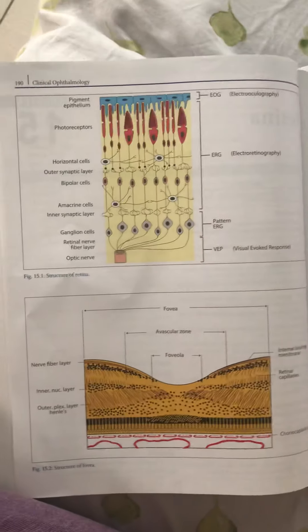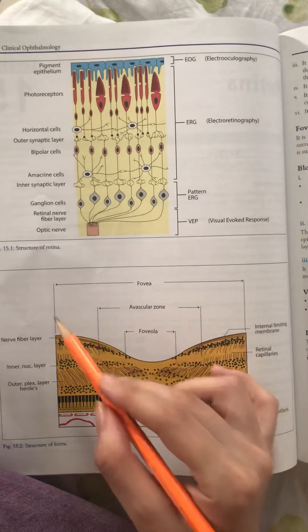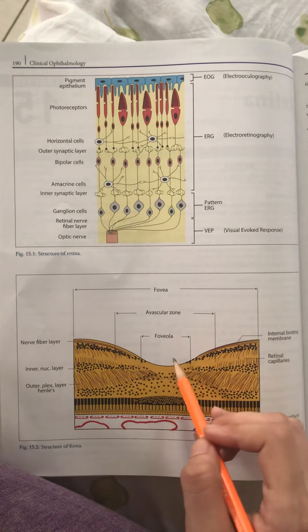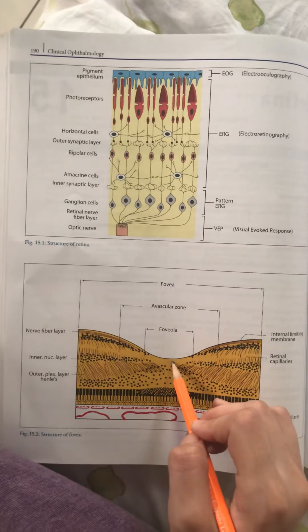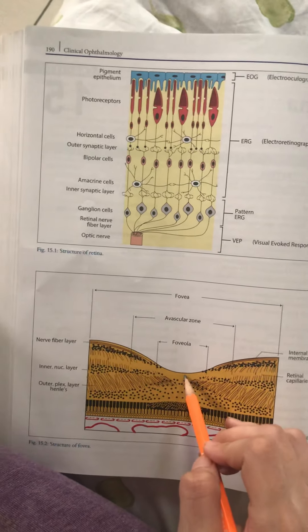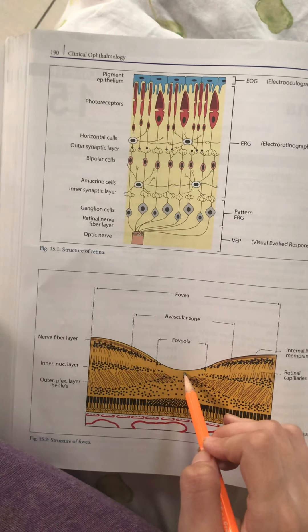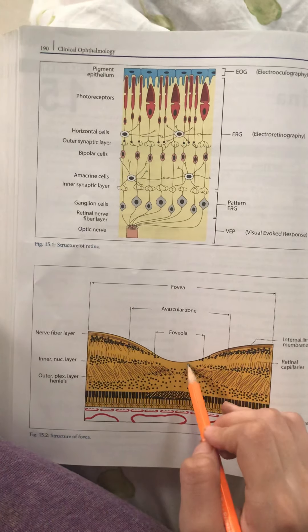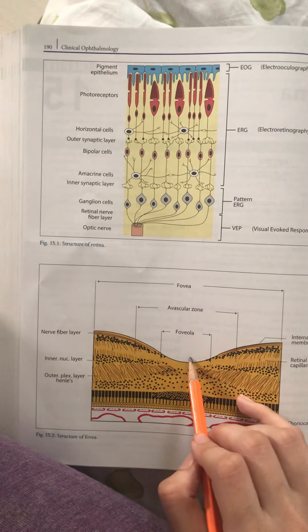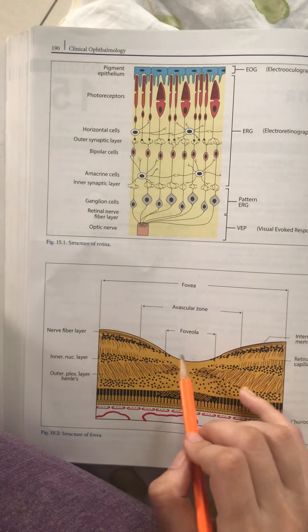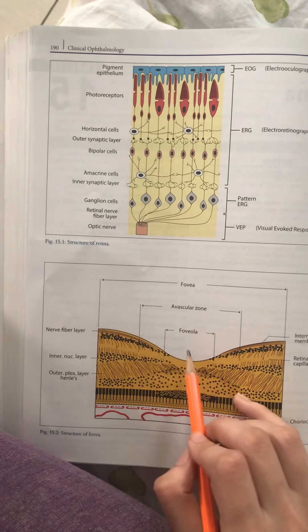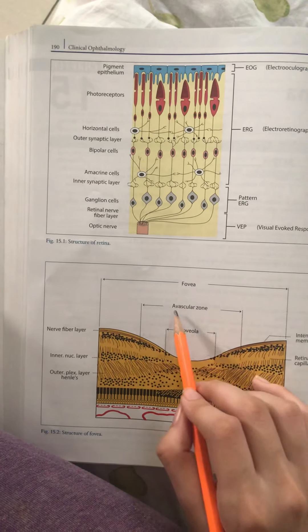In the foveola region, all retinal layers are present across the whole macula. The foveola is avascular — there are no blood vessels, no rods, and no ganglion cells. The retina is thinnest at this point. There are only cones here. This entire foveal region is an avascular zone.